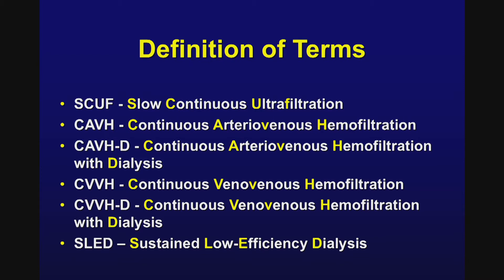Due to the hazards of having large-bore catheters in large arteries such as the femoral artery and large veins, they wanted to move to a less invasive system. So we evolved to CVVH, or continuous venovenous hemofiltration, where blood supply came from a large vein — typically the femoral vein — and was returned back to the patient also through the femoral vein. Hemofiltration was used for fluid removal.